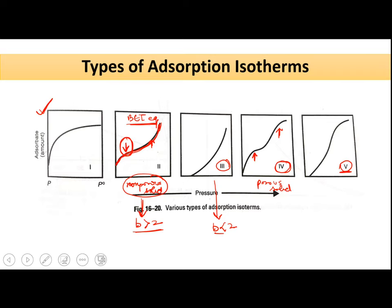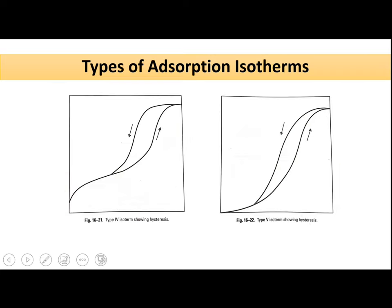Both Type 4 and Type 5 show hysteresis. Hysteresis means that as you increase the pressure, the amount of gas adsorbed follows one particular curve, but once you reduce the pressure, it does not follow the same path — it takes a different path while coming down. This same thing is encountered in Type 5 as well.